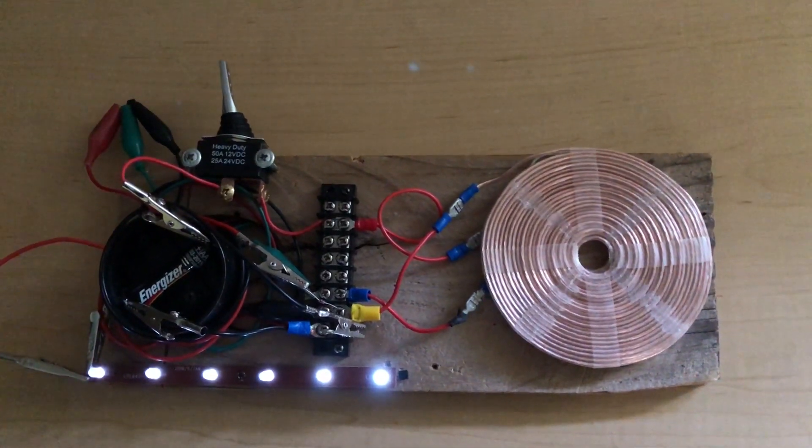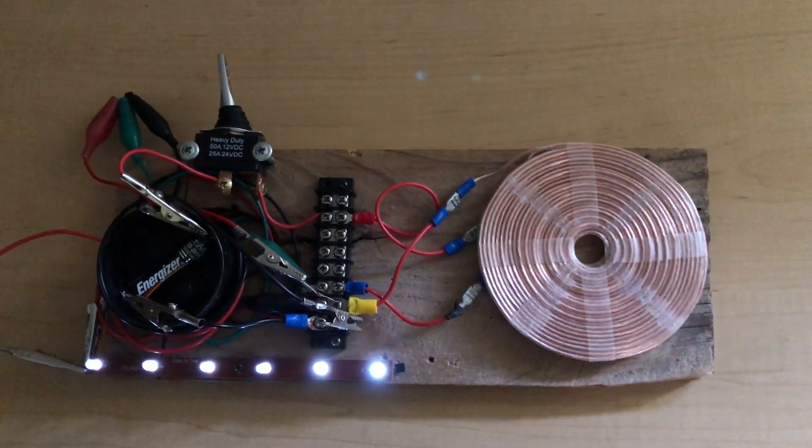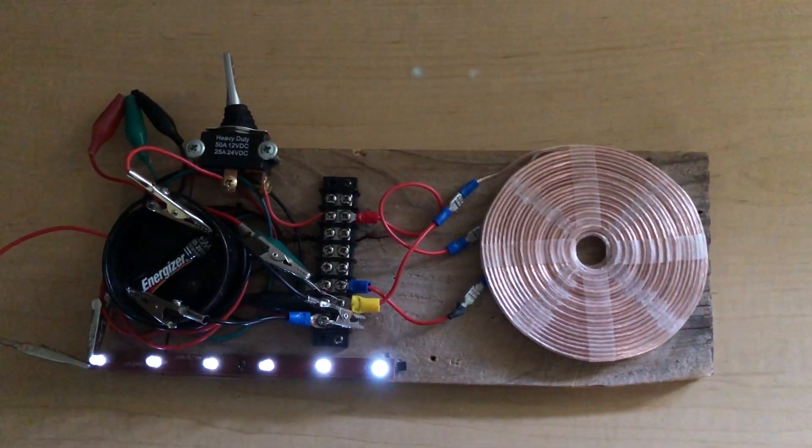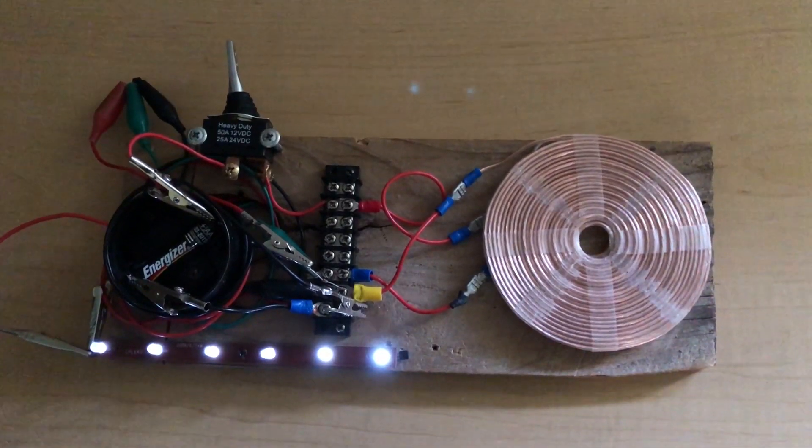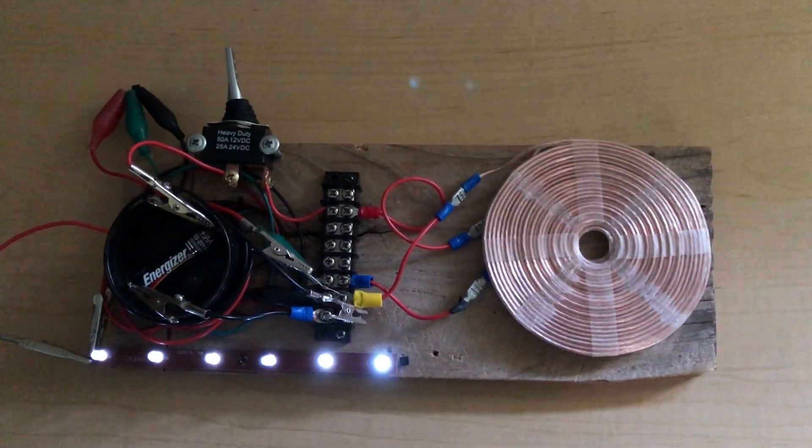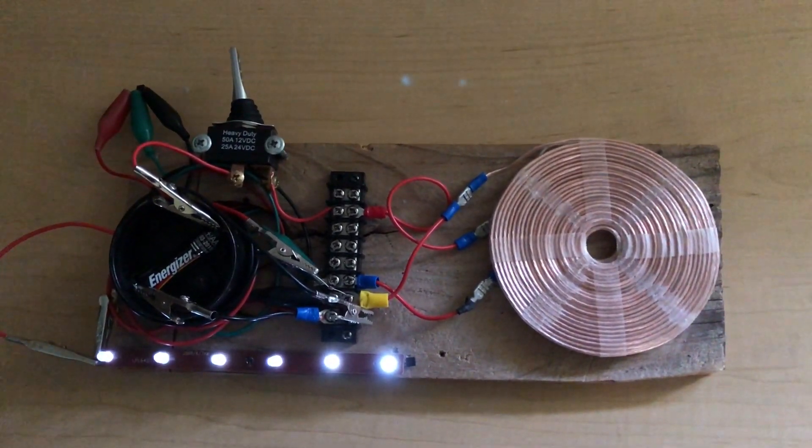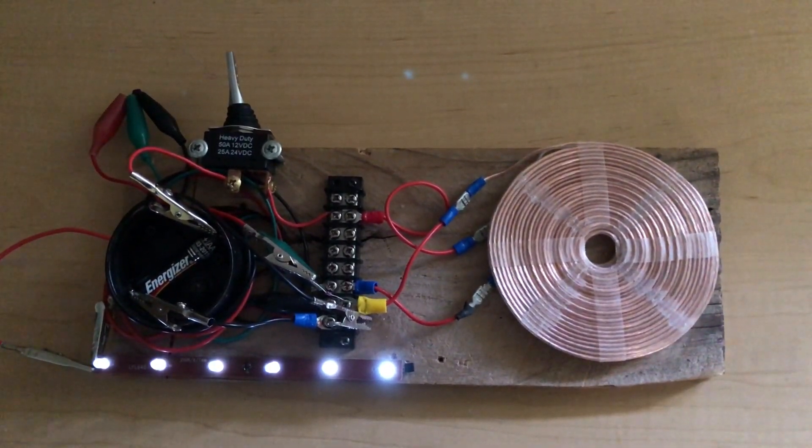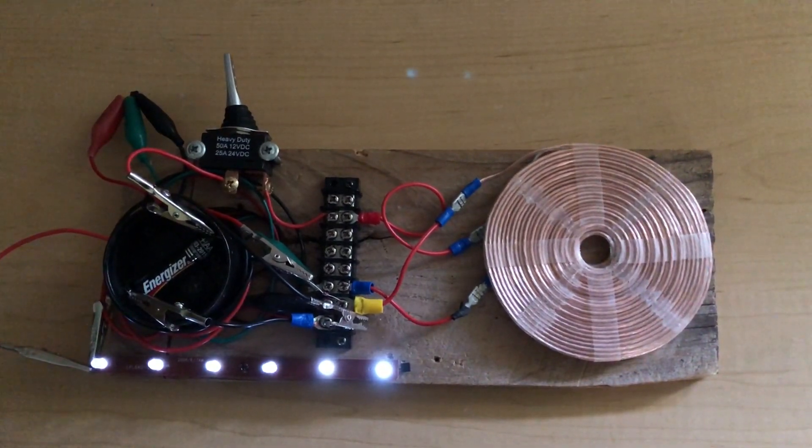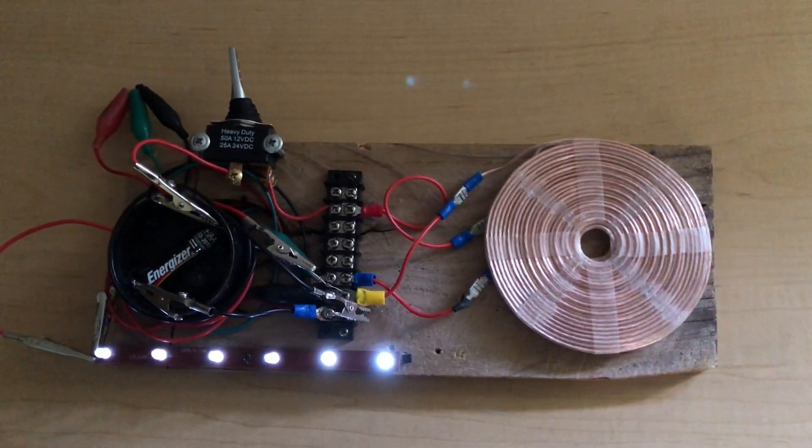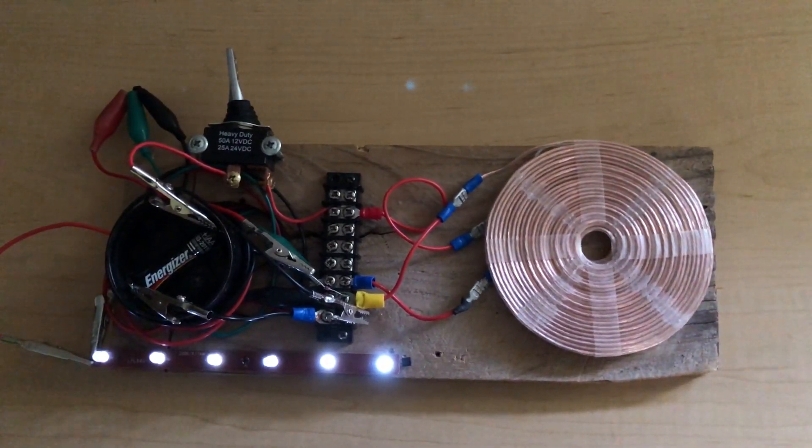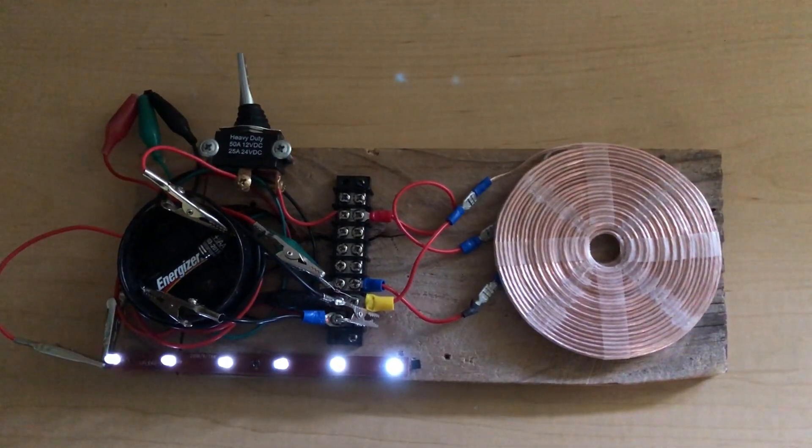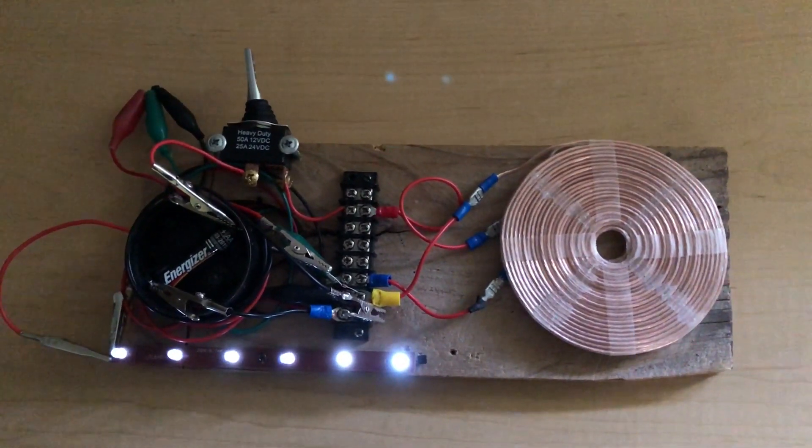Here's a simple jewel thief circuit that uses a Tesla bifiler pancake coil instead of a regular toroid. In this case, I've got a 1.5 volt battery that's lighting six LEDs. This LED circuit normally requires three of these 1.5 volt batteries.